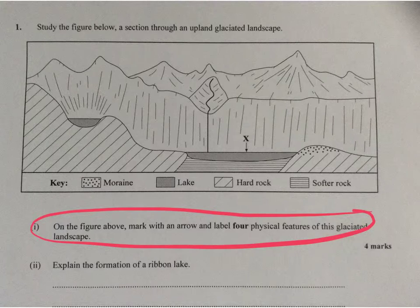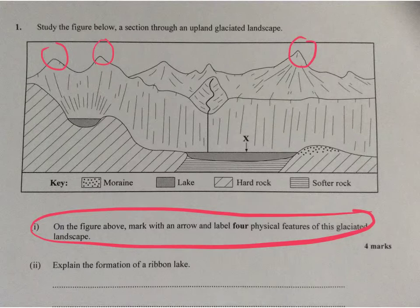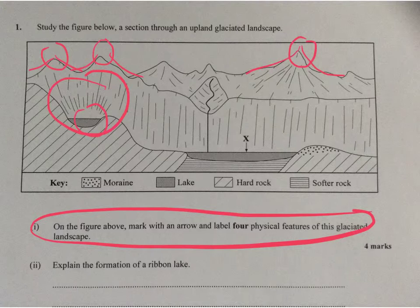So if you think about the pyramidal peak, you've got one here — you could probably count these as pyramidal peaks — and given that you've got that feature, you can also identify that you've got aretes. In this case you've got aretes here, here, and here. You've got a corrie, and you've got a tarn. So by naming the pyramidal peak, the aretes, the corrie, and the tarn, you've got your four physical features, and therefore you've got your four marks.